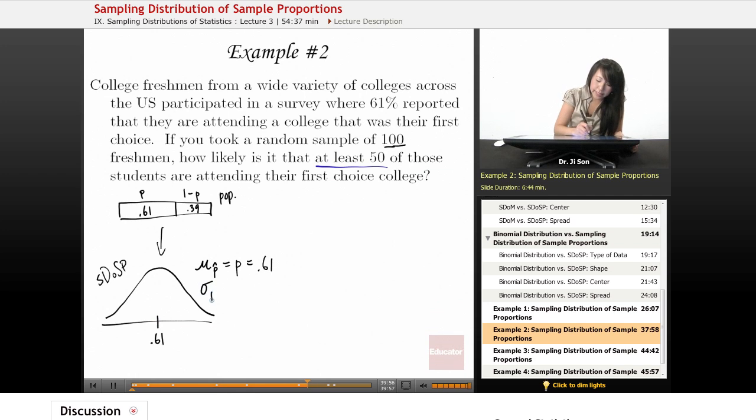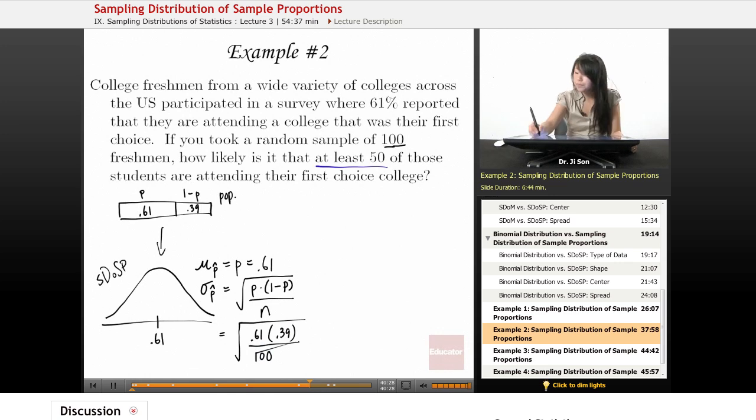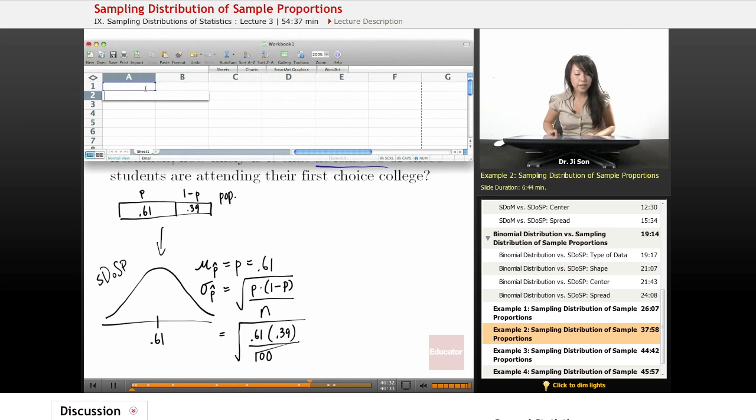And so I should probably find my SDOSP's standard error. So we call it standard error because it's a sampling distribution. And so here it's the square root of P times 1 minus P over N, and that's going to be the square root of 0.61 times 0.39 divided by 100. So that's about 0.0488.